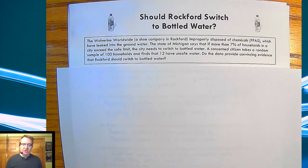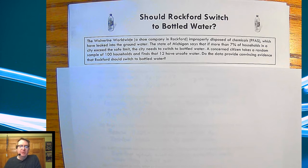So Wolverine Worldwide, a shoe company in Rockford, Michigan, improperly disposes of chemicals which leak into the groundwater. The state of Michigan says that if more than 7% of the households exceed the safe limit, then the city needs to use bottled water. A concerned citizen takes a random sample of 100 households and finds 12 of them to have unsafe water. Do the data provide convincing evidence that Rockford should switch to bottled water?